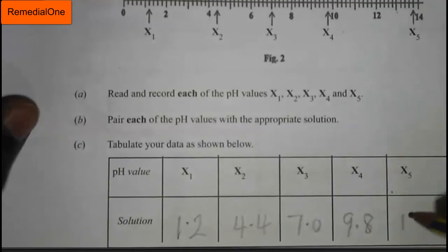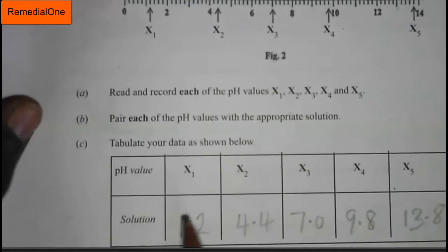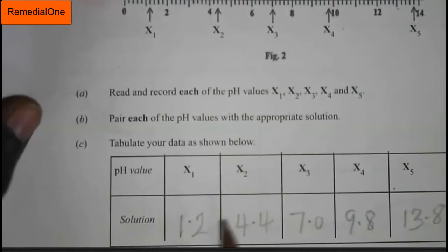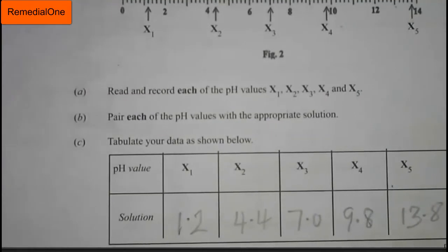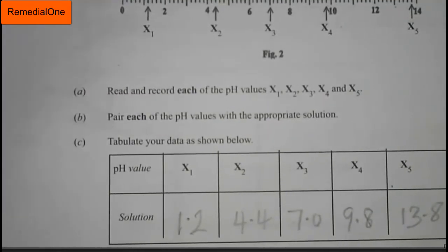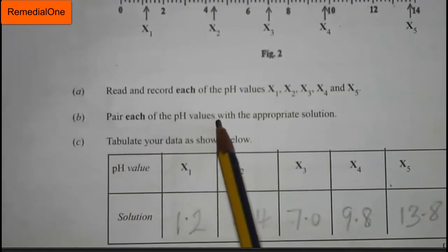If you are able to fill the table up to this point, as I've already said, you score 10 marks. Now let's look at the second part of the question — we should pair each of the pH values with the appropriate solution. A pH of 1.2 is a highly acidic solution.